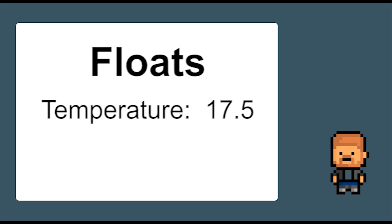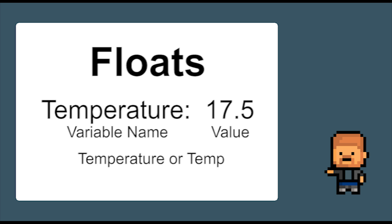Imagine we are collecting the temperature and it is 17.5 degrees. The variable could be called 'temperature' or 'temp' and the value would be 17.5. This type of variable is called a float, as it has a decimal point. We can call the variable what we want — temperature or temp. The shorter the better, that way it is less typing. But it is important to understand what the variable is and what value it is storing, so name your variables appropriately.